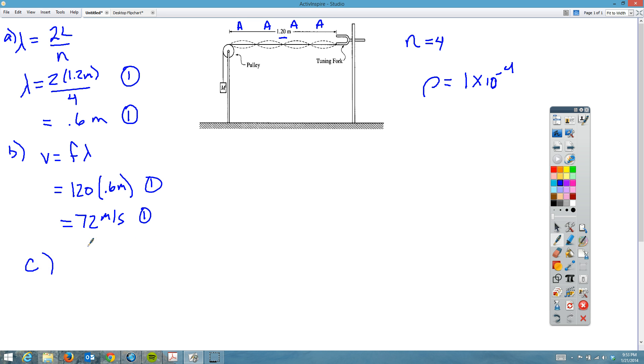For letter C, they want to know if the mass needs to be increased or decreased to double the loops. Remember, n is the number of loops, not the mass. They want to know if that mass needs to be increased or decreased to double the loops, and basically all you have to do here is decrease the mass.